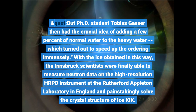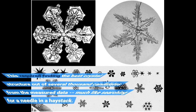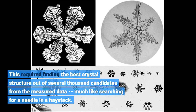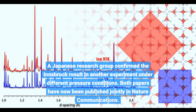Adding a small amount of normal water to the heavy water turned out to speed up the ordering immensely. With the ice obtained in this way, the Innsbruck scientists were finally able to measure neutron data. This required finding the best crystal structure out of several thousand candidates from the measured data, much like searching for a needle in a haystack. A Japanese research group confirmed the Innsbruck result in another experiment under different pressure conditions, and both papers have now been published jointly in Nature Communications.